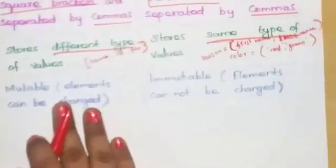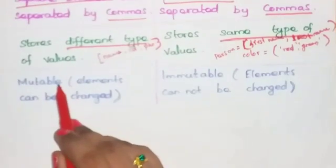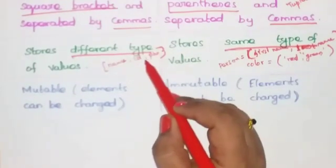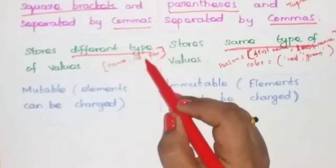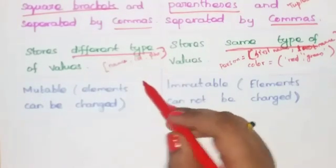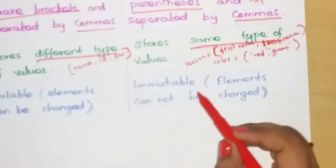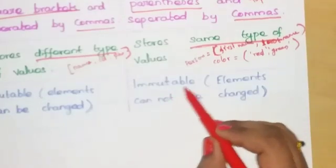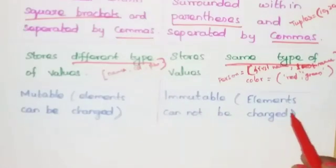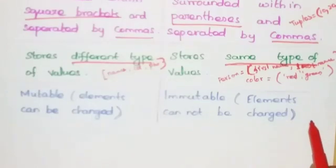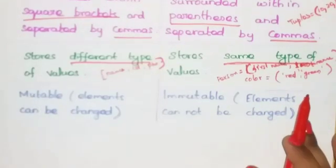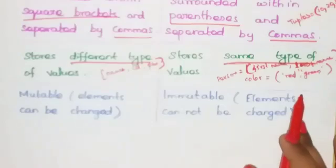The next point is mutability. A list is mutable, meaning you can change or modify its elements. A tuple is immutable, meaning the elements cannot be changed once they are assigned.